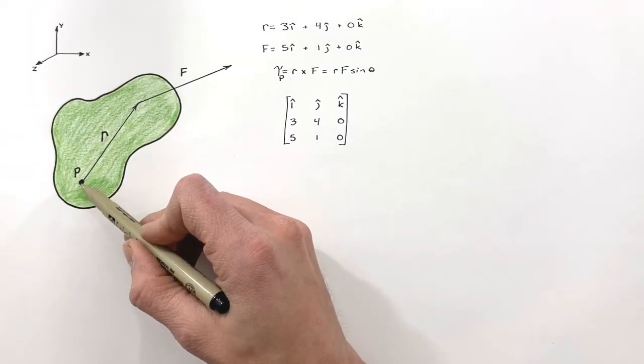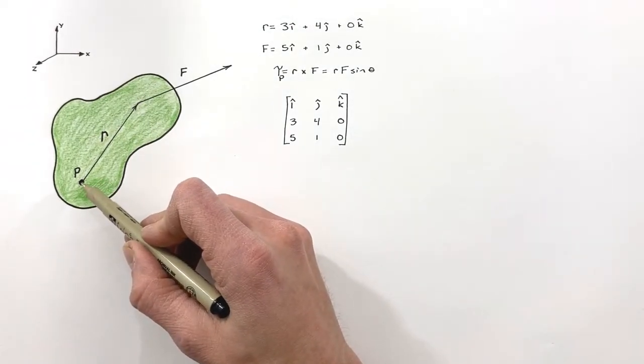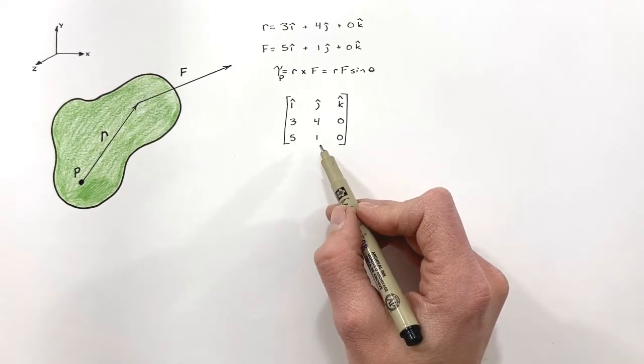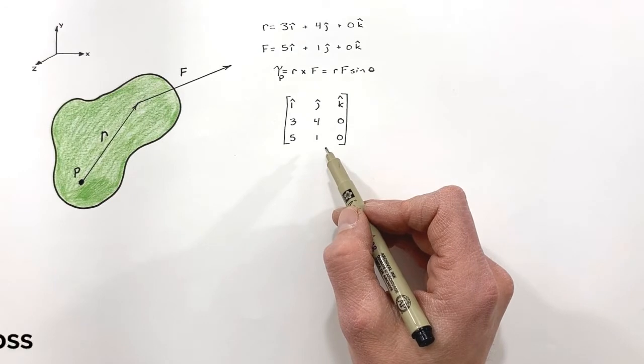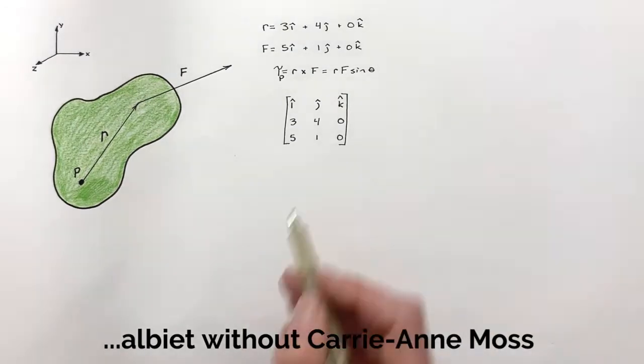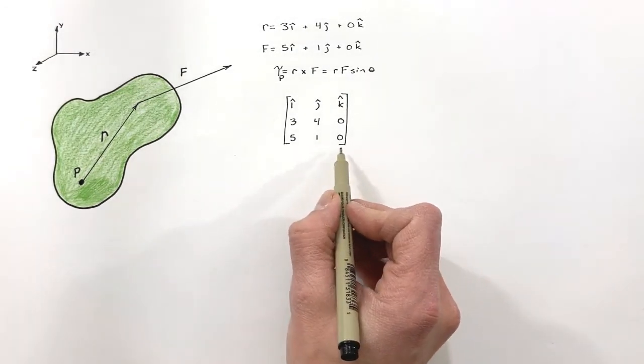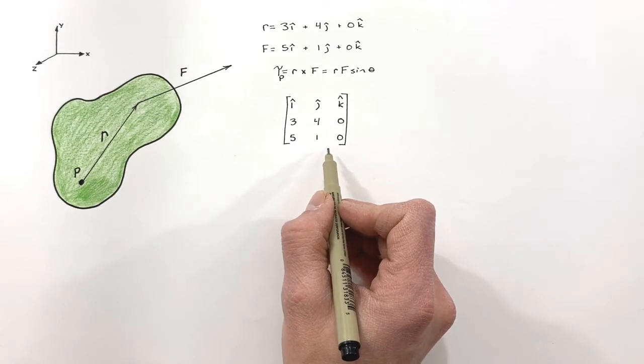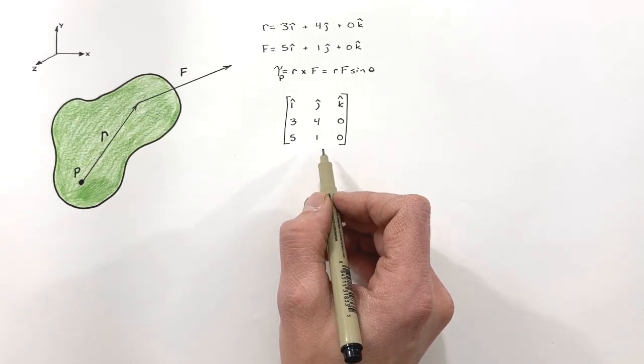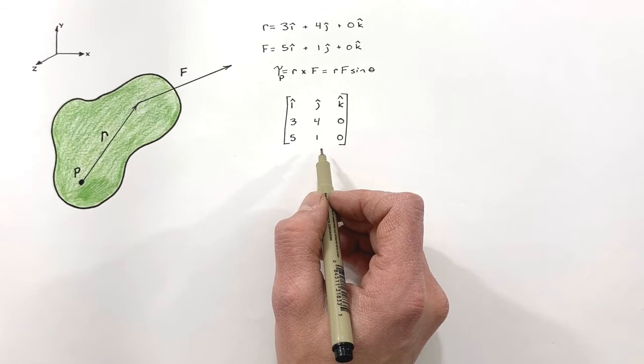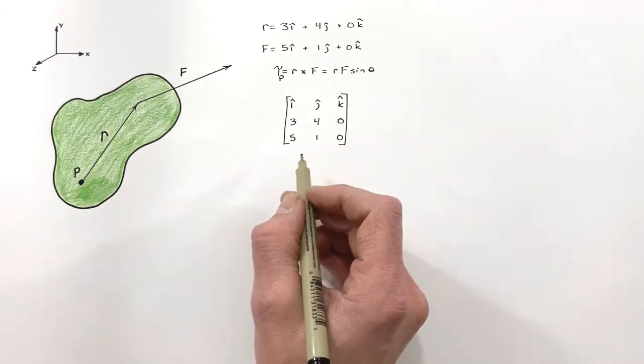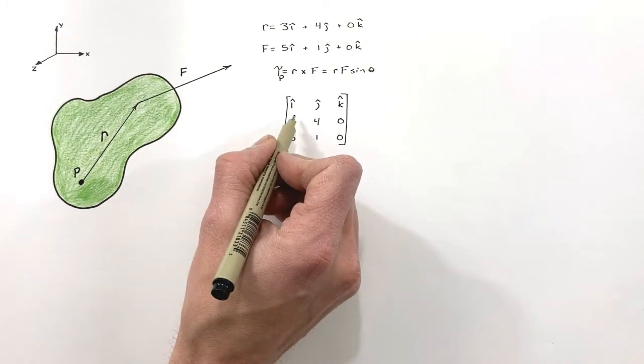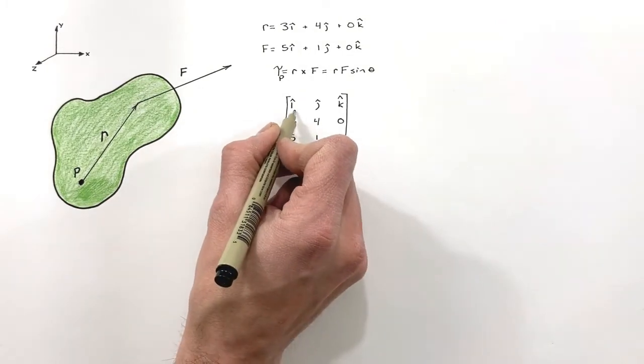So to find the total torque around point p in this problem, all we need to do is find the determinant of this three by three matrix, or just solve the matrix. Now there's lots of different ways to solve a matrix like this. I'm going to go through and use what is more or less called a graphical method of solving a three by three matrix. And so what I'm going to do, rather than breaking this up into smaller two by two matrices as some people would, I'm going to simply work my way through this in diagonals.